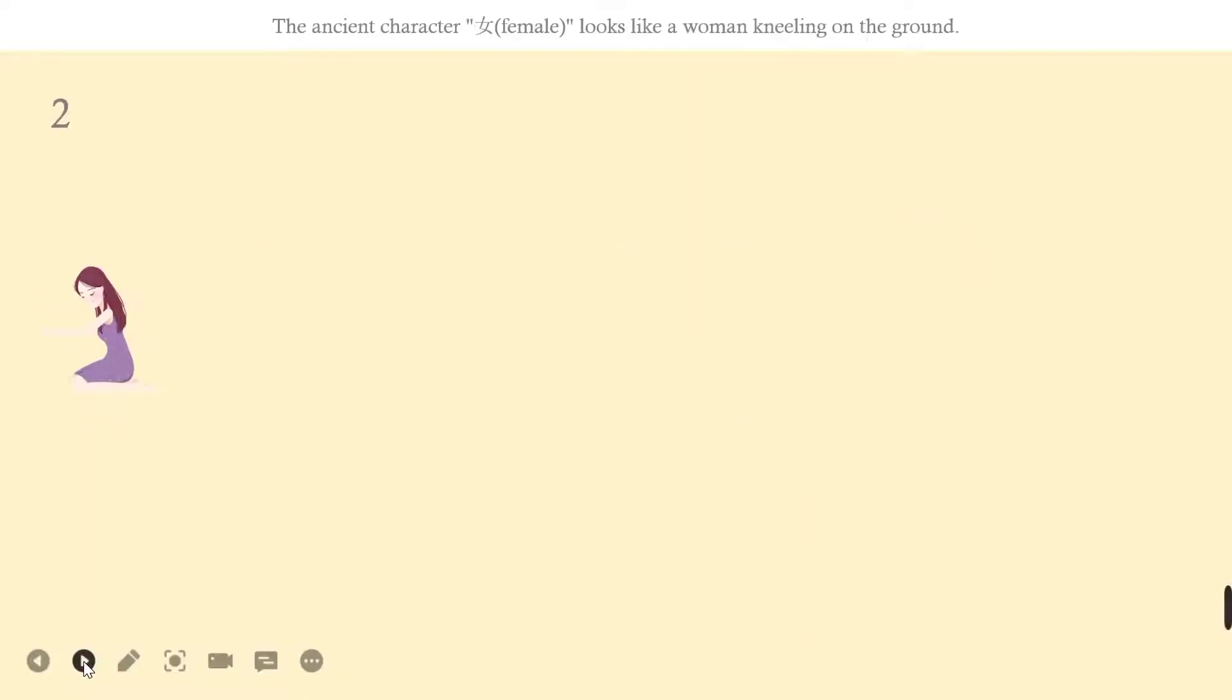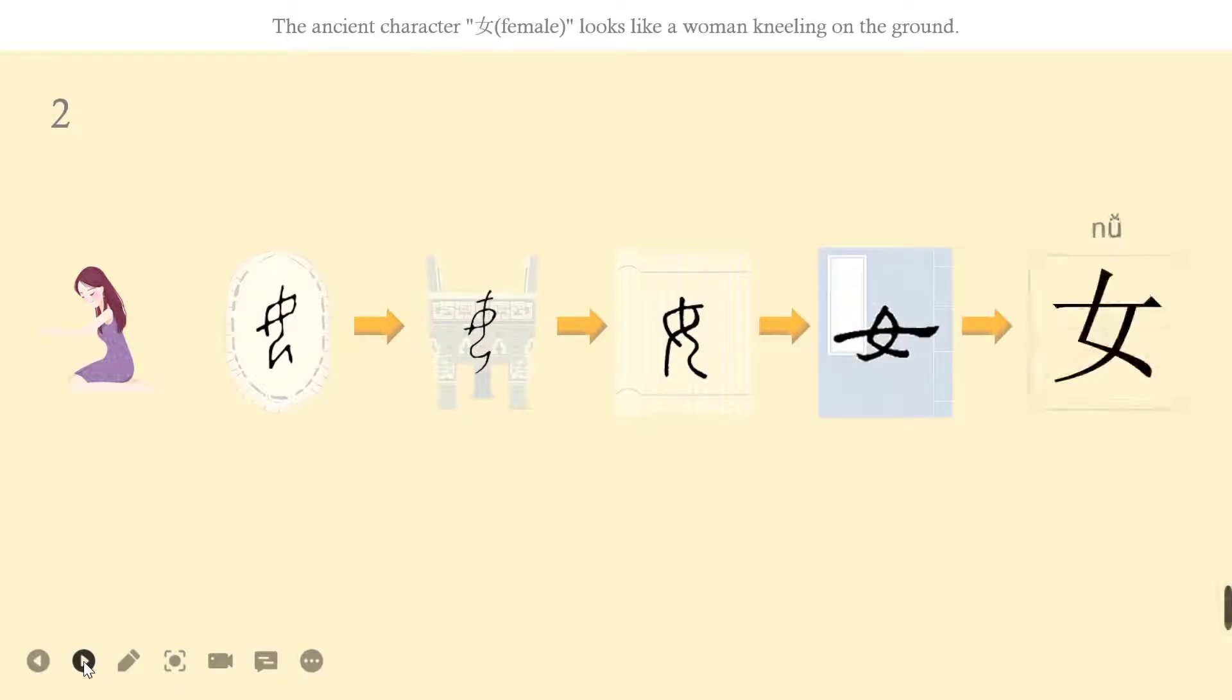Let's learn the second character, nǚ. You can see a girl kneeling on the ground. The ancient character nǚ looks like a woman kneeling on the ground. Even though the regular script changed, we can still see a little bit of female shape in the modern character nǚ.